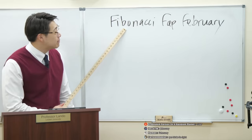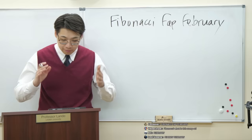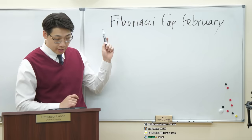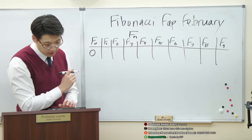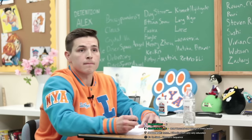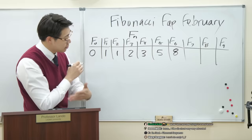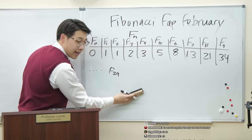It is Fibonacci Fap February. In mathematics, the Fibonacci sequence is a sequence in which each number is the sum of the two preceding numbers. F of zero, then F of one is one. F of seven is thirteen. F of twenty-nine would be three hundred seventeen thousand, eight hundred eleven.